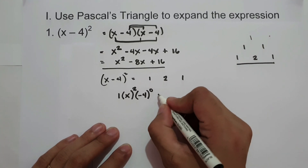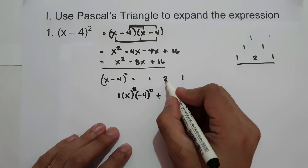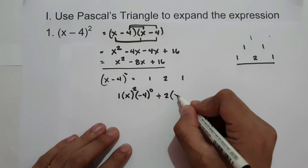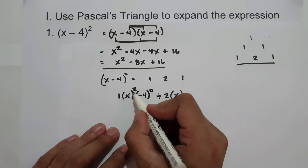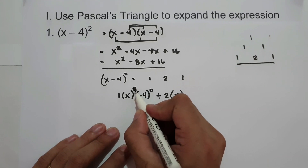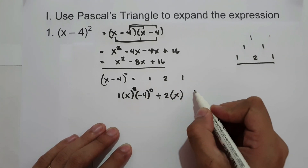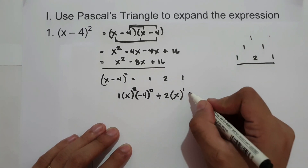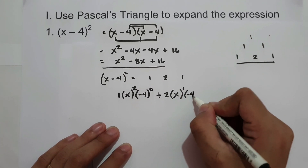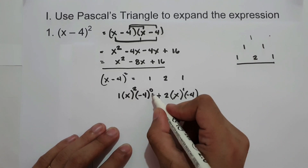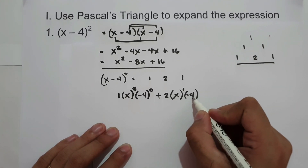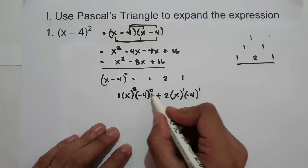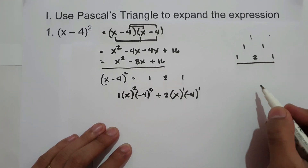Our next term has coefficient 2, times the first term x — so the exponent of x now becomes 1, going from highest to lowest. Then the second term is negative 4, and from 0, the exponent of negative 4 will be 1. So from highest to lowest for x, and from lowest to highest for negative 4.